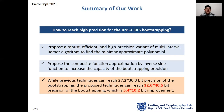Let me summarize our work. Our key question is how to reach high precision for the RNS-CKKS bootstrapping. To find the optimal minimax approximated polynomial for several piecewise and non-arithmetic continuous functions, we propose a robust, efficient, and high-precision variant of the Multi-Interval Remez Algorithm. And to increase the capacity of RNS-CKKS bootstrapping precision, we propose composite function approximation by inverse sign function.